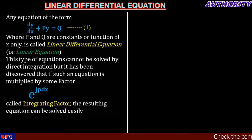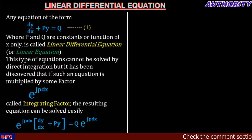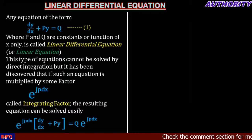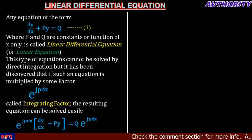We have our equation dy/dx + Py = Q. Multiplying this equation by the integrating factor e raised to power integral of P dx, we multiply both sides by this factor. The left-hand side becomes e^(∫P dx) times (dy/dx + Py), and the right-hand side becomes Q multiplied by e raised to power integral of P dx.